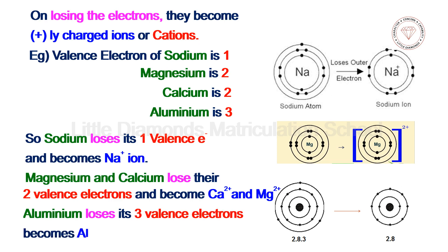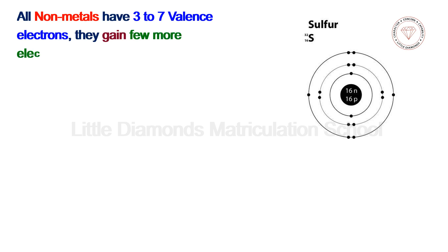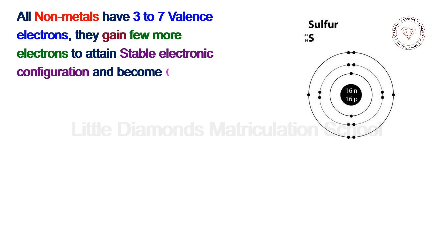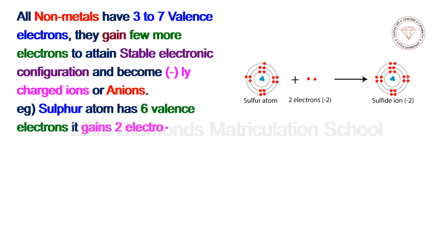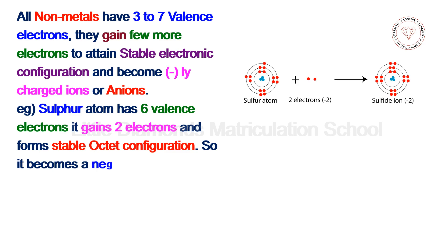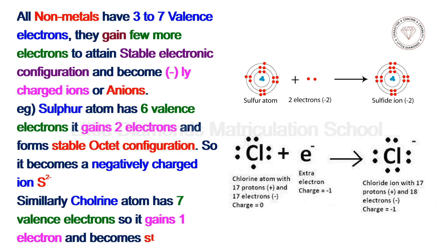All non-metals have 3 to 7 valence electrons. They gain a few more electrons to attain stable electronic configuration and become negatively charged ions, or anions. For example, sulfur has 6 valence electrons — it gains 2 electrons to form a stable octet configuration and becomes S²⁻. Similarly, chlorine has 7 valence electrons, so it gains 1 electron and becomes Cl⁻ ion.